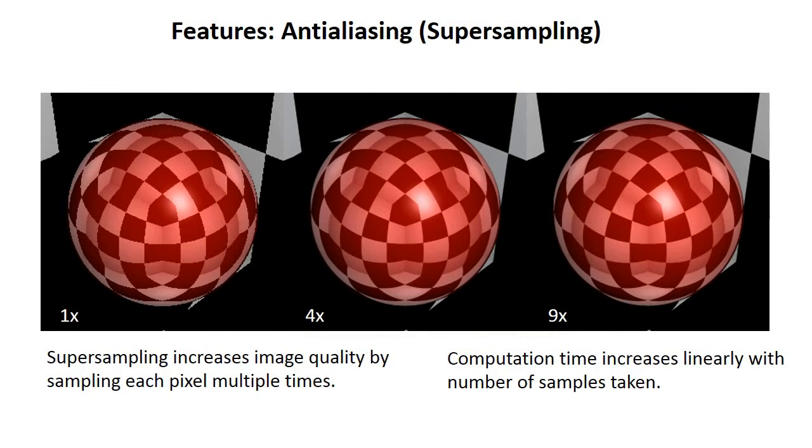To finish things off, I want to show a couple of extra features we included with our ray tracer. First off is anti-aliasing, which is a pretty simple technique for smoothing out your images and making them look nicer and more realistic. It does this by taking every pixel and sampling it multiple times, and then averaging those samples together. This gives you a pretty massive increase in image quality while only requiring a linear increase in computation time.